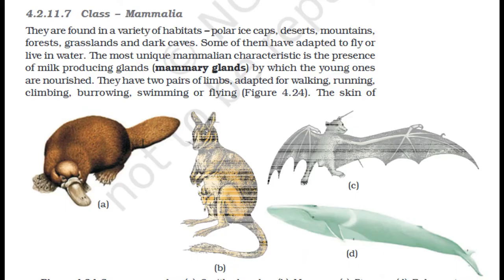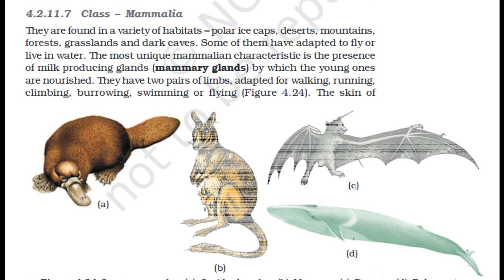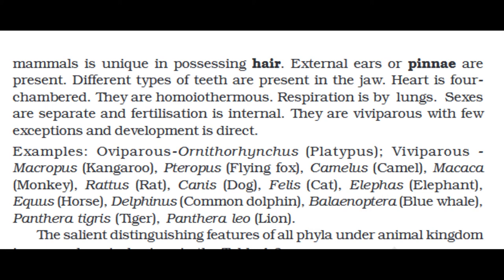Section 4.2.11.7: Class Mammalia. They are found in a variety of habitats — polar ice caps, deserts, mountains, forests, grasslands, and dark caves. Some have adapted to fly or live in water. The most unique mammalian characteristic is the presence of milk-producing glands (mammary glands) by which the young ones are nourished. They have two pairs of limbs adapted for walking, running, climbing, burrowing, swimming, or flying. The skin of mammals is unique in possessing hair externally; pinnae (external ears) are present. Different types of teeth are present in the jaw. The heart is four-chambered. They are homoiothermic. Respiration is by lungs. Sexes are separate and fertilization is internal. They are viviparous with few exceptions, and development is direct. Examples: Ornithorhynchus (platypus, oviparous), Macropus (kangaroo, viviparous), Pteropus (flying fox), Camelus (camel), Macaca (monkey), Rattus (rat), Canis (dog), Felis (cat), Elephas (elephant), Equus (horse), Delphinus (common dolphin), Balaenoptera (blue whale), Panthera tigris (tiger), Panthera leo (lion).